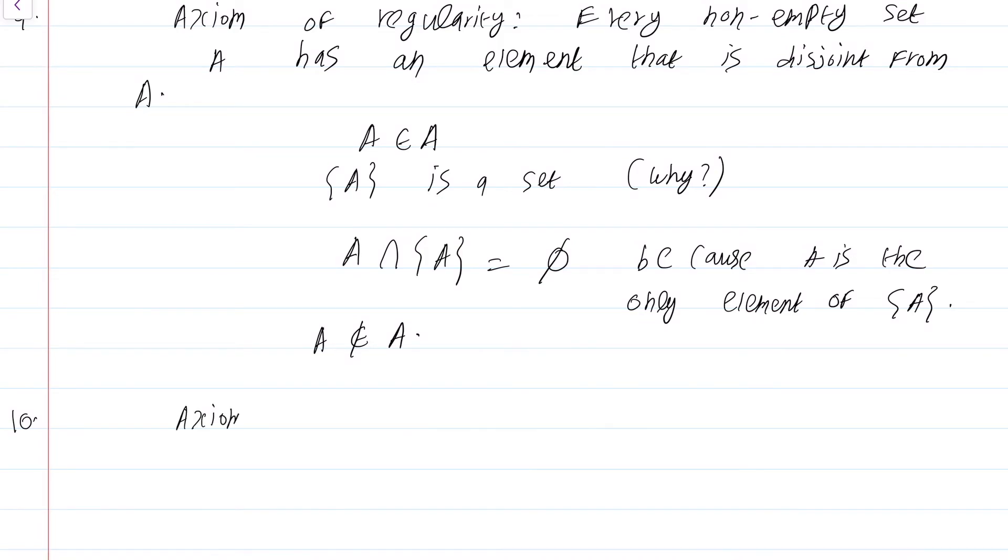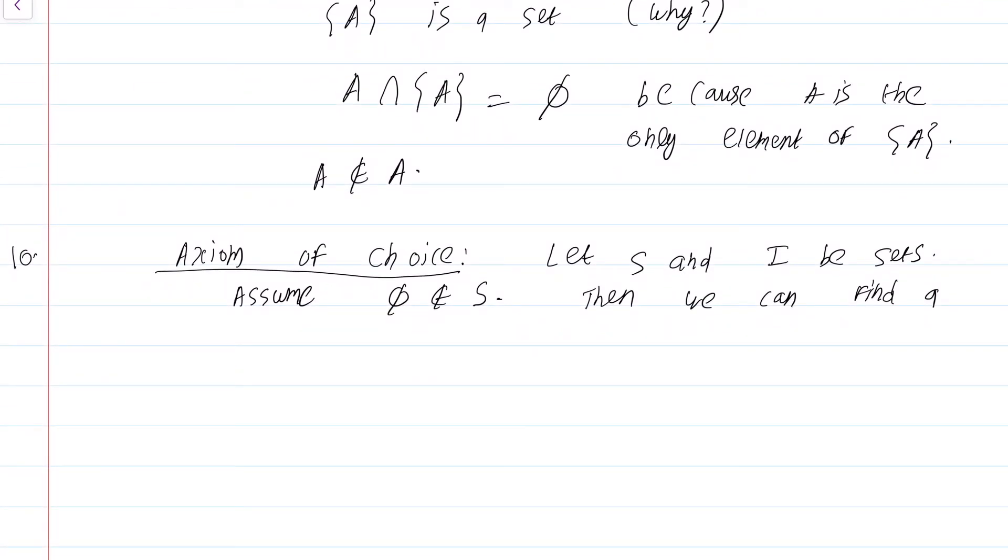And finally, 10. The C in ZFC is the axiom of choice. This is yet another axiom that I do not even know whether I am going to use. I might use it tacitly without my own knowledge. Let S and I be sets. Assume the empty set is not an element of S. Let F from I to S be a function.